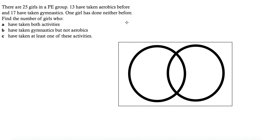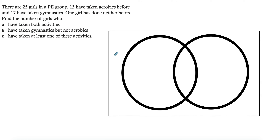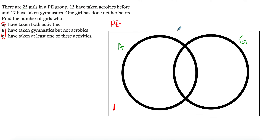Now a slightly different question — this time the intersection is not given. We represent it as an unknown. We have 25 girls: 13 have done aerobics and 17 have done gymnastics. We also know one girl has done neither. We don't know how many did both, so I'm going to represent that with X.